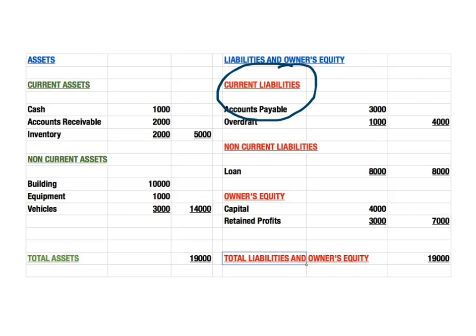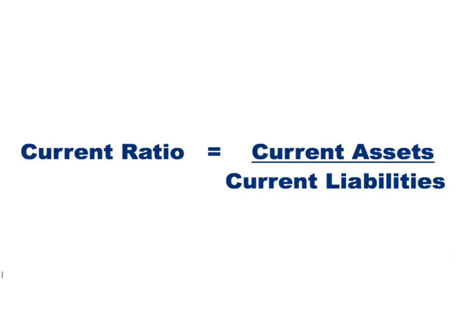It's important for a business to have enough cash on hand to pay back its current liabilities as they fall due. A business that is able to do this is highly liquid, and it needs to have current assets to pay those current liabilities — this is where a business's liquidity comes from. It's the relationship between their current assets and their current liabilities, represented by the current ratio: current assets divided by current liabilities.